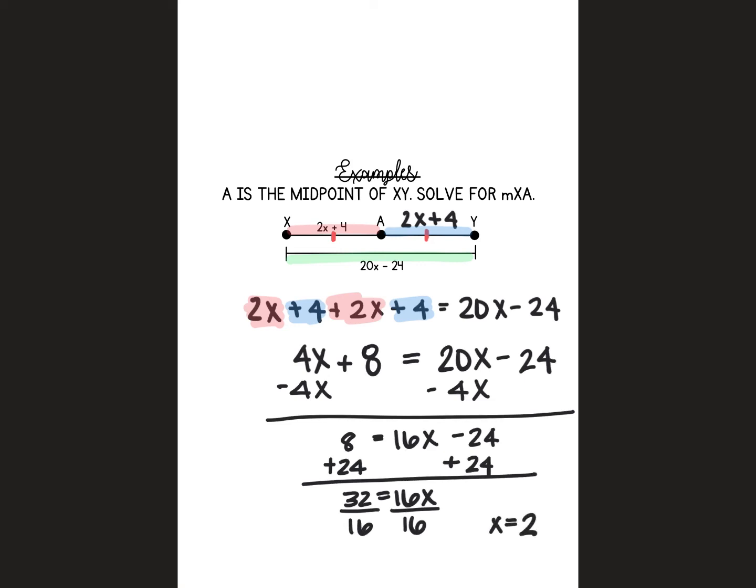Then we just need to read what we're looking for. So we are solving for the measure of XA, which is this piece that I've highlighted in red. I'm going to go ahead and plug that in. So 2 times 2 plus 4, which is 8.